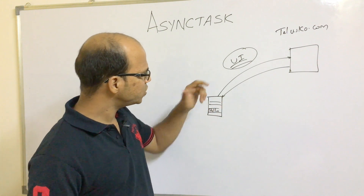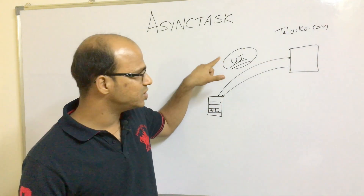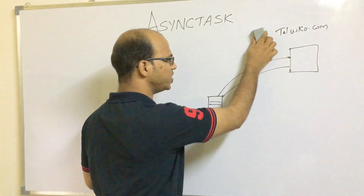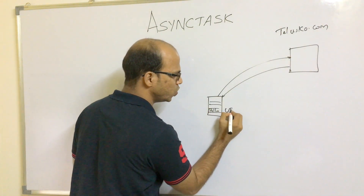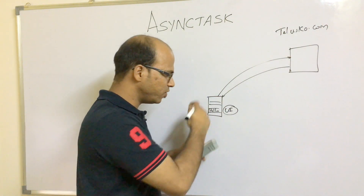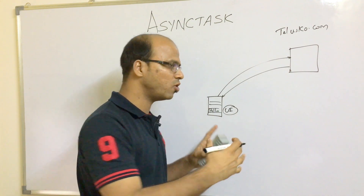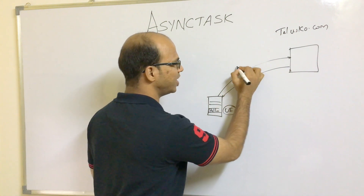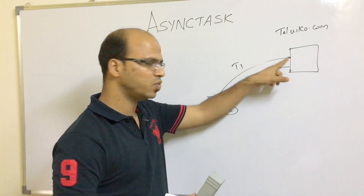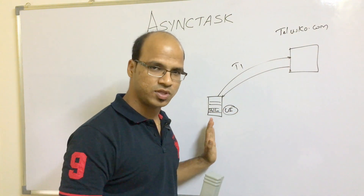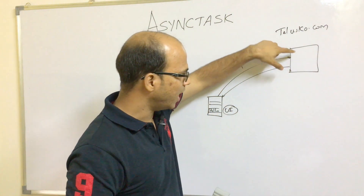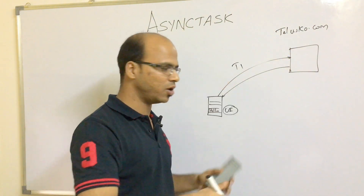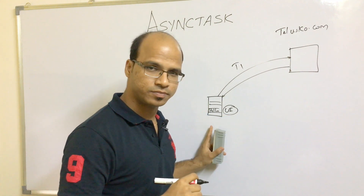So what we can do is, instead of having the UI thread send a request, we have to create one more thread. The UI thread stays busy with your app itself. For sending the request, we use a new thread — let's call it T1. T1 is busy with the request. Meanwhile, the UI is still with you, so by the time T1 is sending the request and getting the response, you can still access your app — scroll up and scroll down.